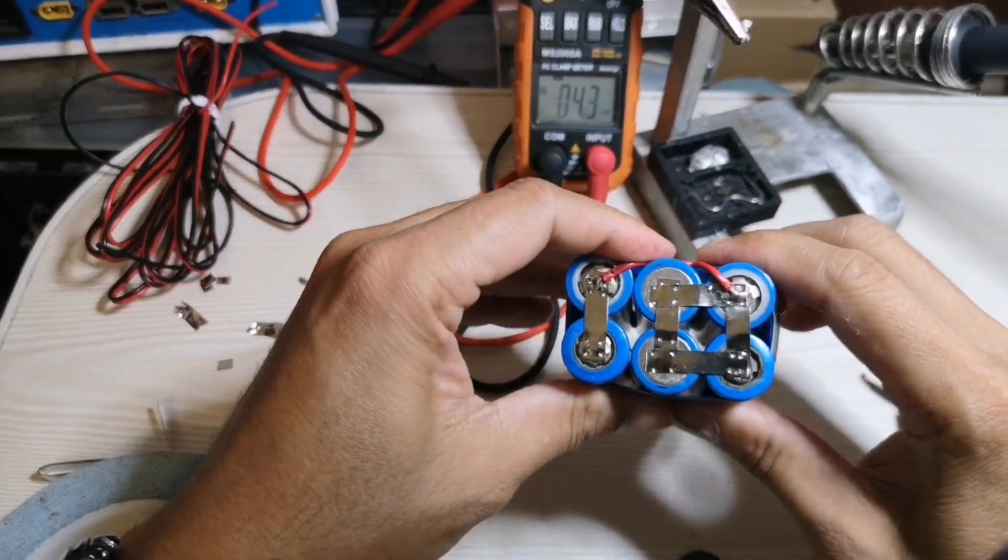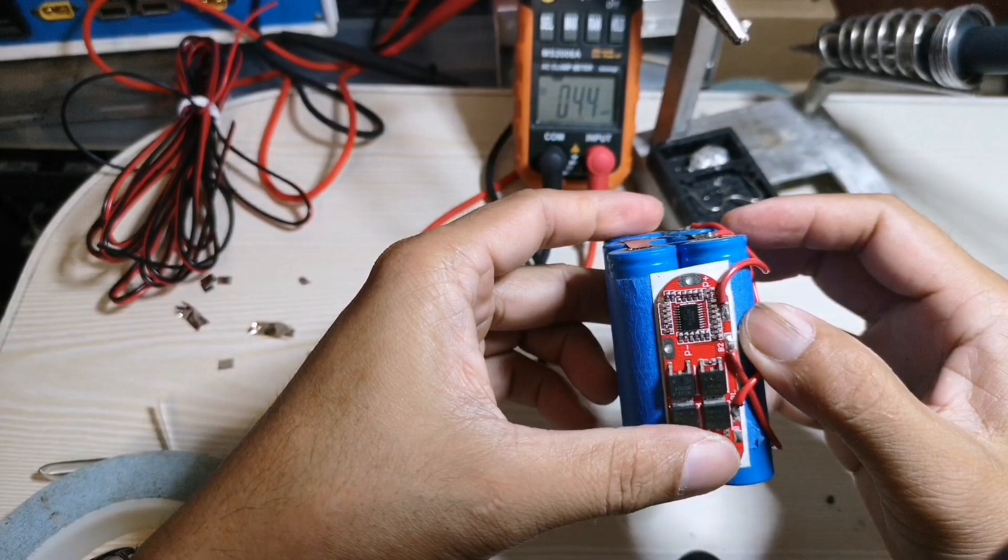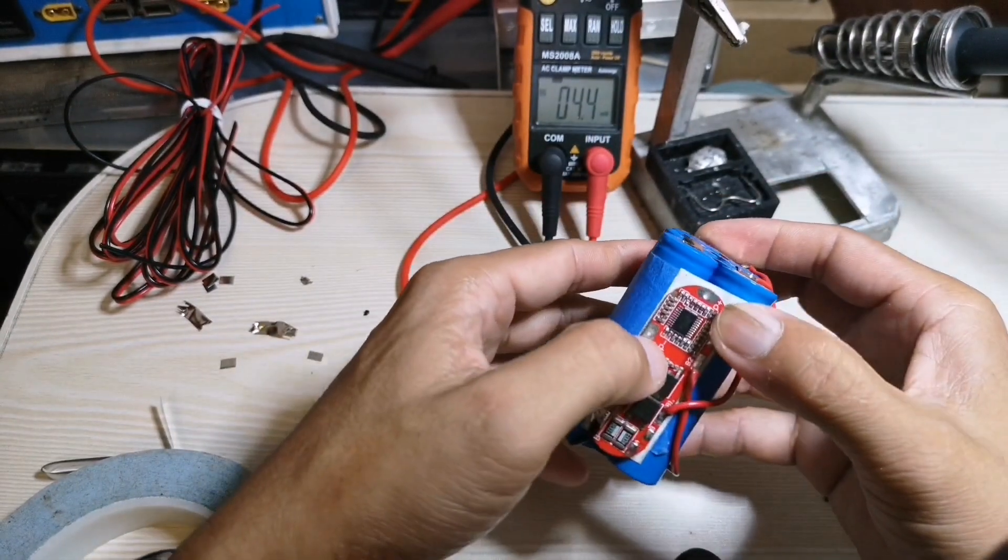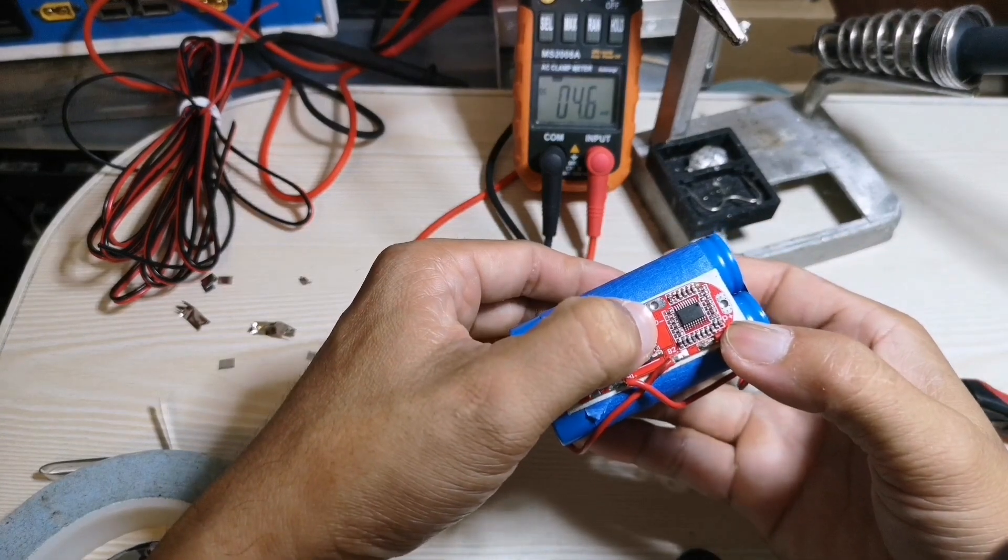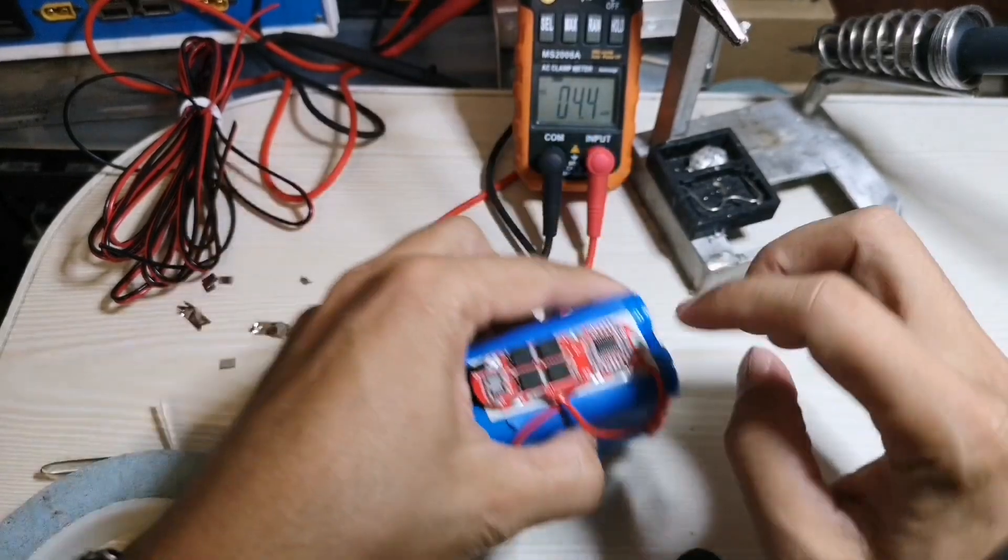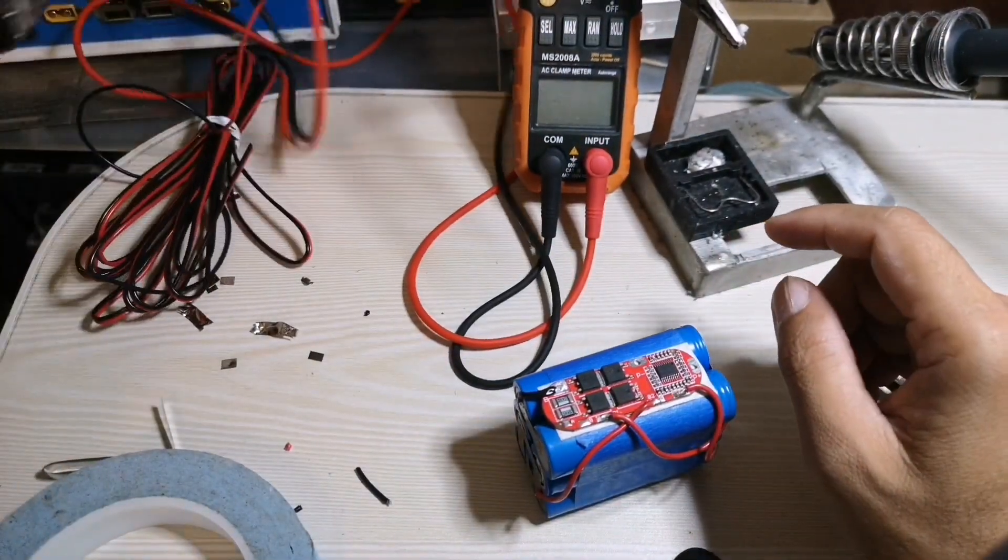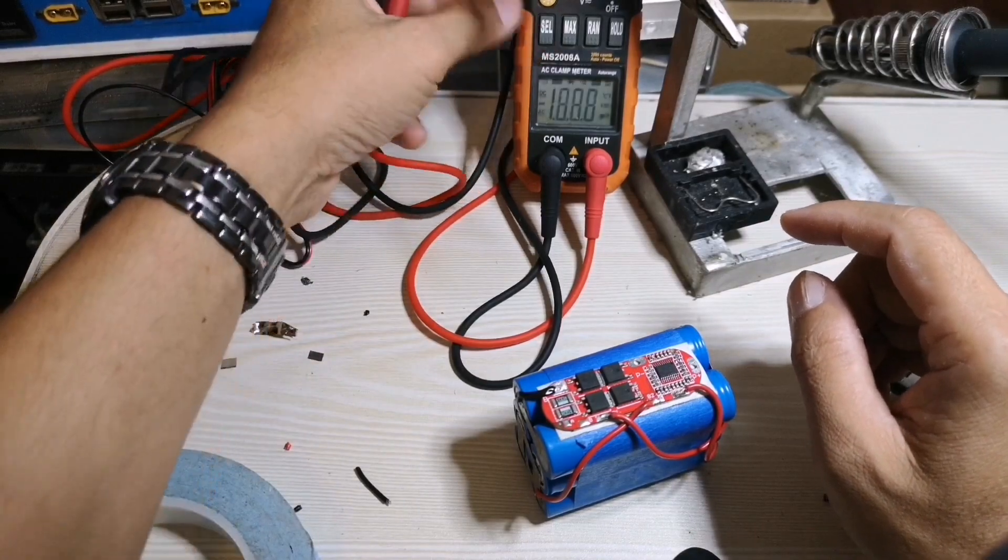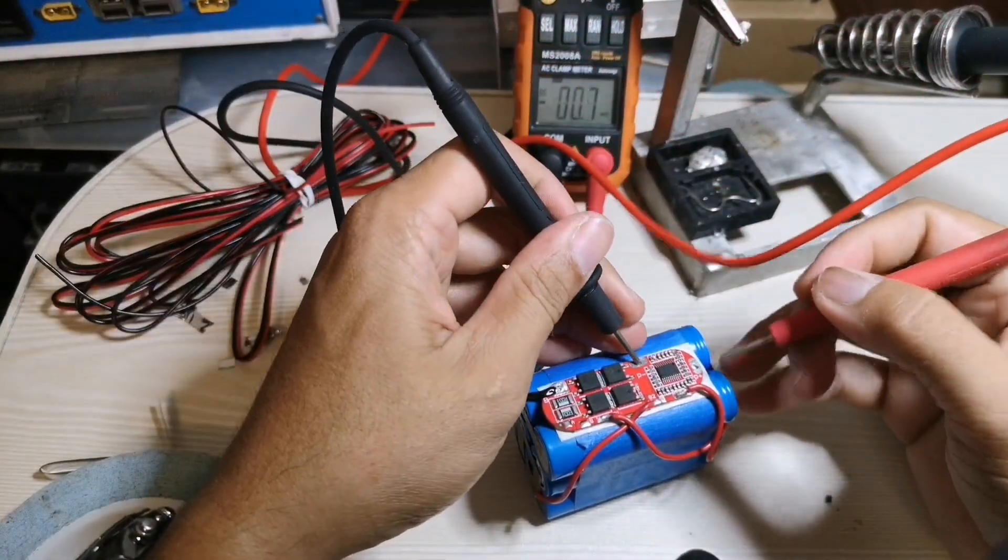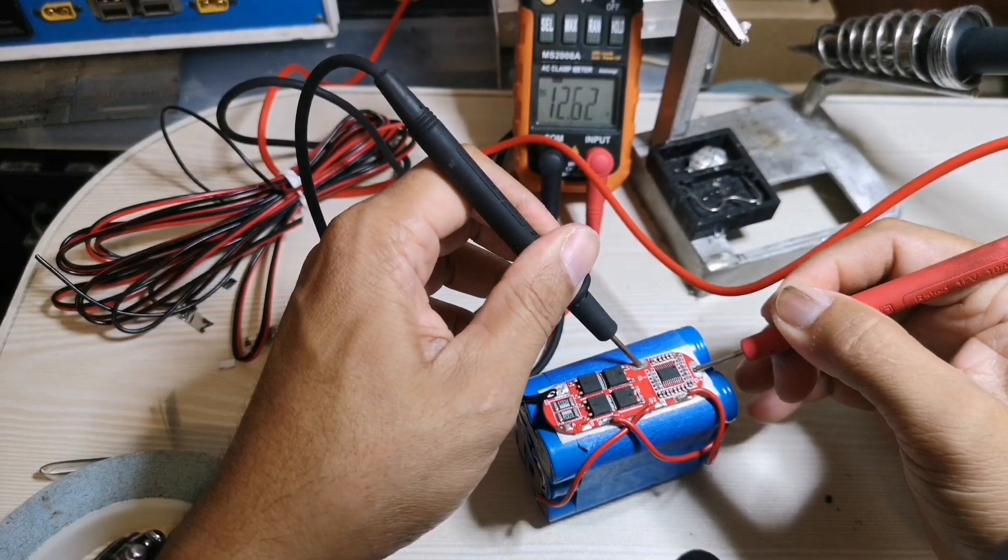And that's it, finished. This P means power positive and this is P negative, power negative. This is the output and the input. So let's check if this is 12 volts. There it is, it is 12 volts.